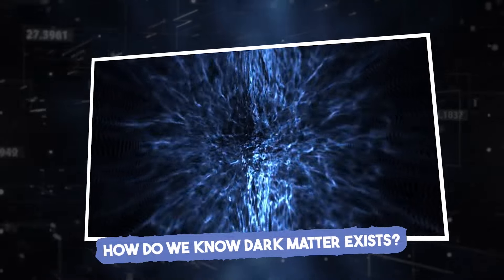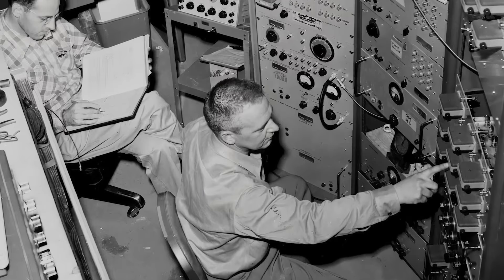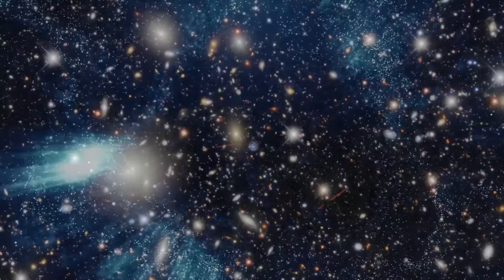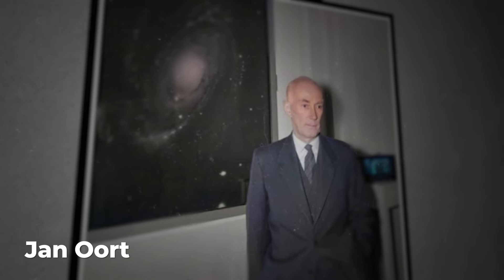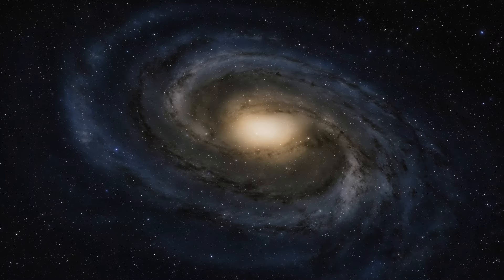How do we know dark matter exists? The idea of dark matter might seem like a recent discovery, but the observations hinting at its existence go way back. We're talking almost a hundred years ago. Back in 1927, a Dutch astronomer named Jan Oort was studying our home galaxy, the Milky Way.